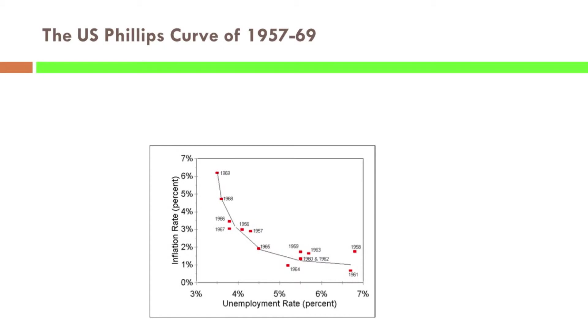Let's see what happened when this advice was actually taken. Here's the U.S. Phillips curve, with the inflation rate on the vertical axis and the unemployment rate on the horizontal axis, for 1957 to 1969. It's a pretty good fit — it looks like there is this trade-off. If you look at the actual dates, you can see we were moving toward higher and higher inflation and getting less and less unemployment, with 1969 at the far northwest corner. It looked like policymakers were exploiting the Phillips curve.